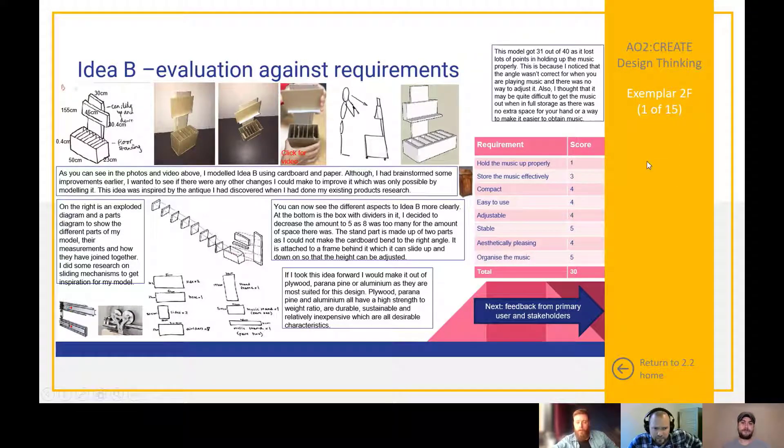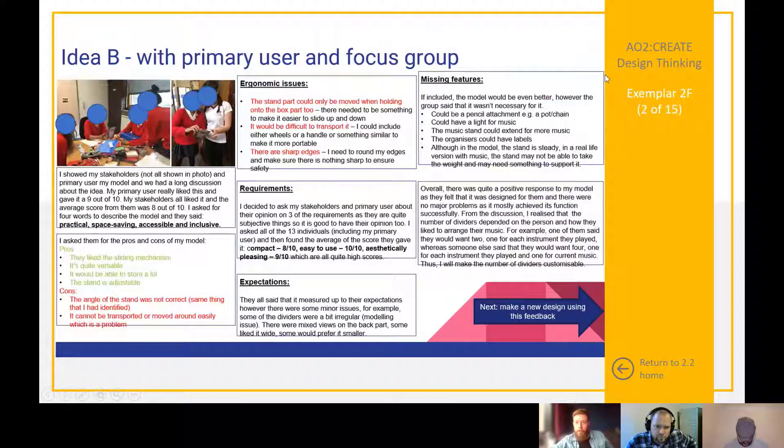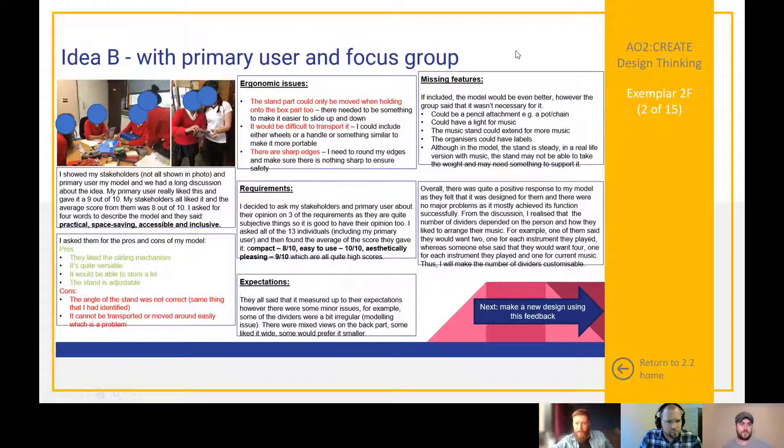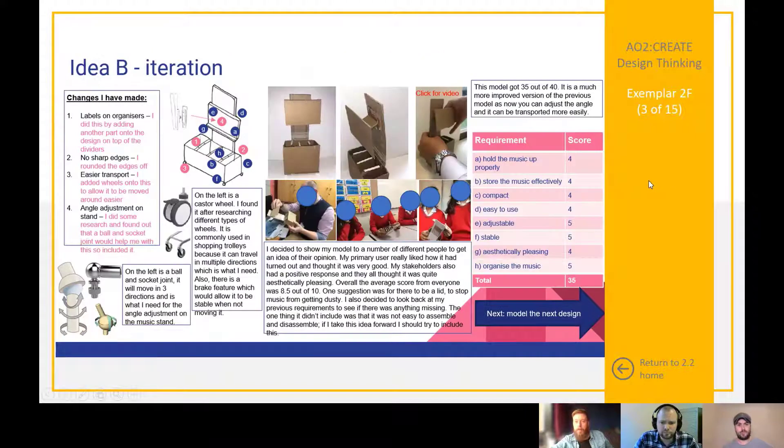Another good thing about this exemplar is how this student has caught with an idea, modeled their idea, but then taken on some feedback from stakeholders and primary users. That's all being assessed. Based on this feedback, on this page, the student has then gone on to make some modifications or iterations to their design based on the feedback they've just received. That's the critical part of this: it's not just making changes for changes sake, it's making changes based on feedback from the people that influence the designs.